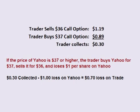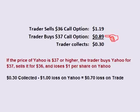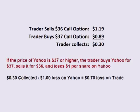Let's break this down. The trader sold a call option with a strike price of $36. Therefore, if the price of Yahoo is over $36 when the option expires, the trader is obligated to sell 100 shares of Yahoo for $36 to the person that purchased the option. The trader also bought the right to buy Yahoo for $37 if the price is $37 or higher. Therefore, if the price of Yahoo is $37 or higher, the trader buys Yahoo for $37 and sells it for $36, losing $1 per share.